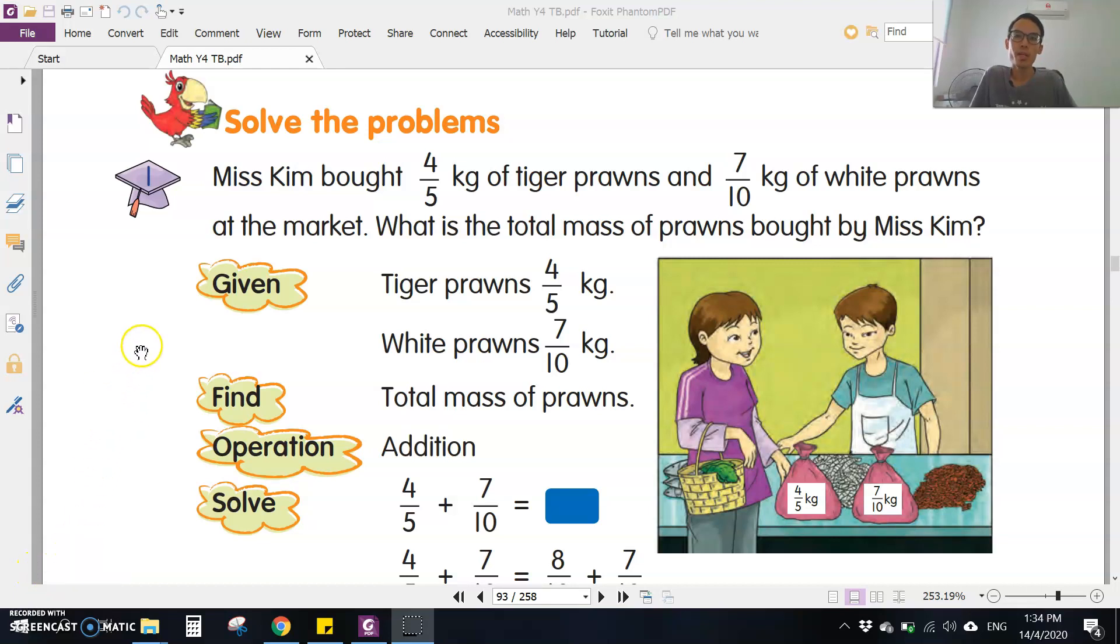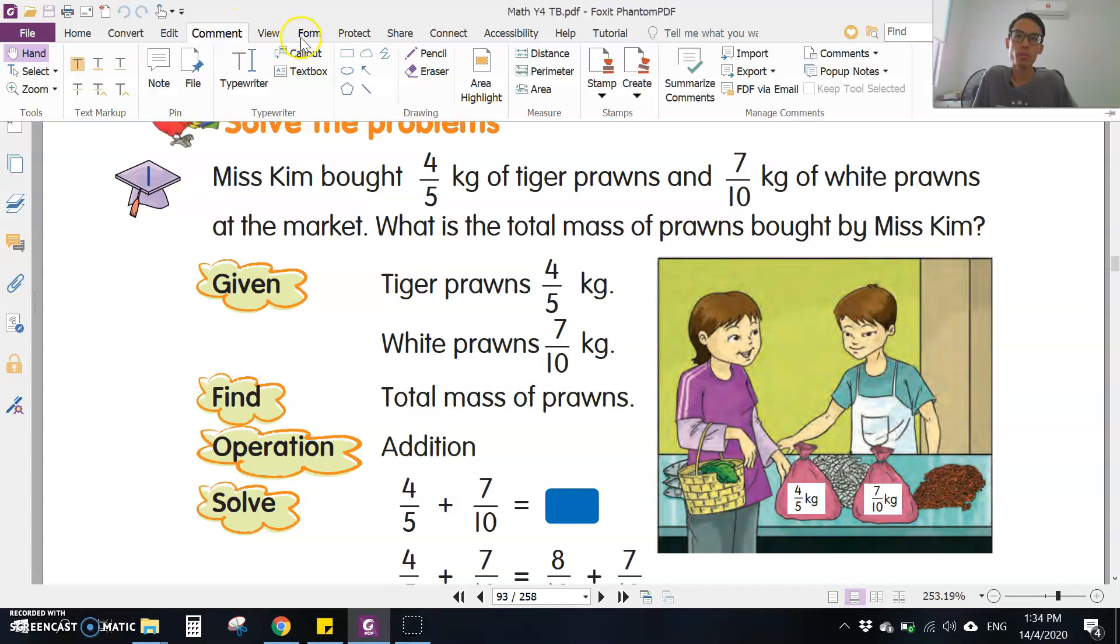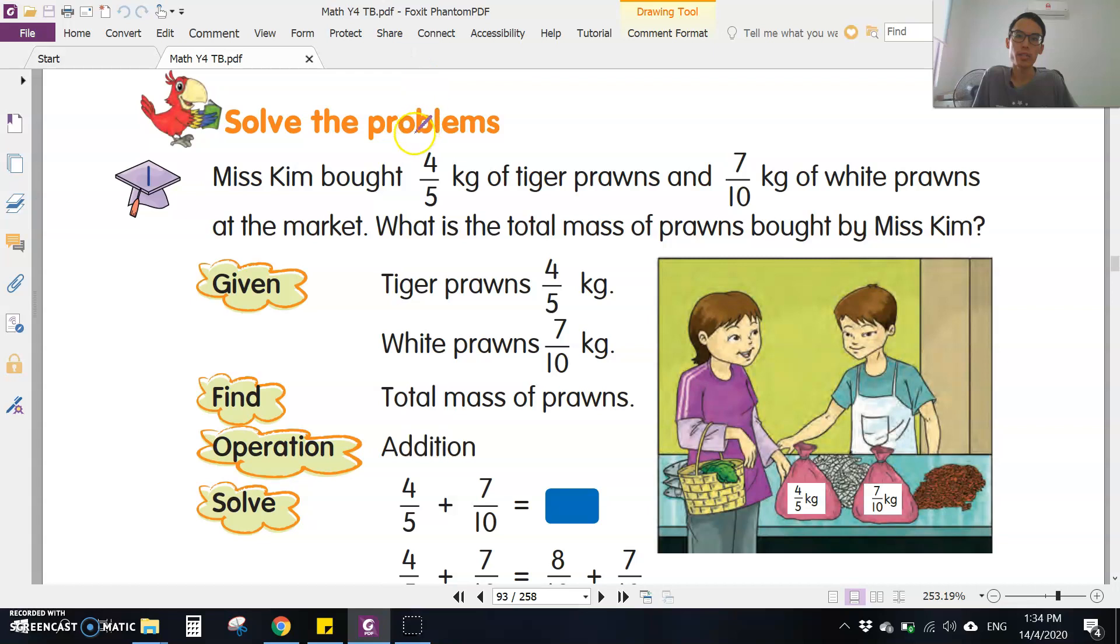Okay, good day everyone. Today we are looking at solving problems for fractions. Let's look at Example 1. Miss Kim bought 4/5 kilogram of tiger prawns and 7/10 kilogram of white prawns at the market. What is the total mass of prawns bought by Miss Kim?